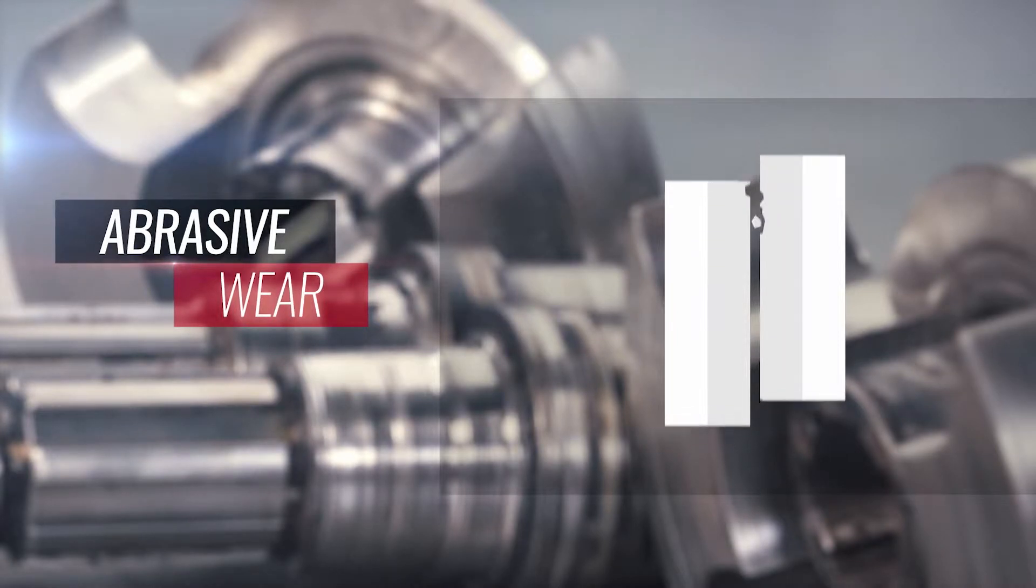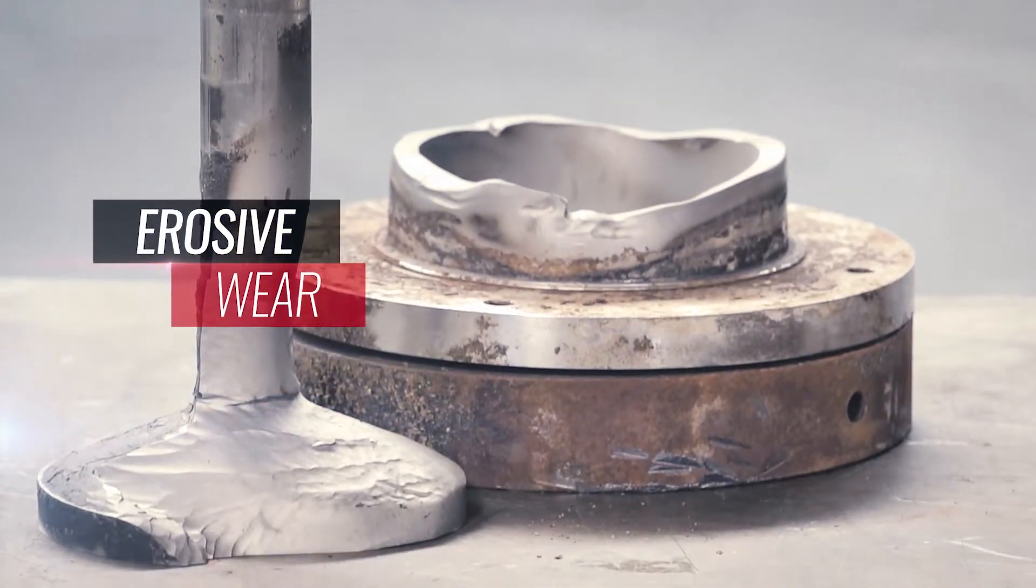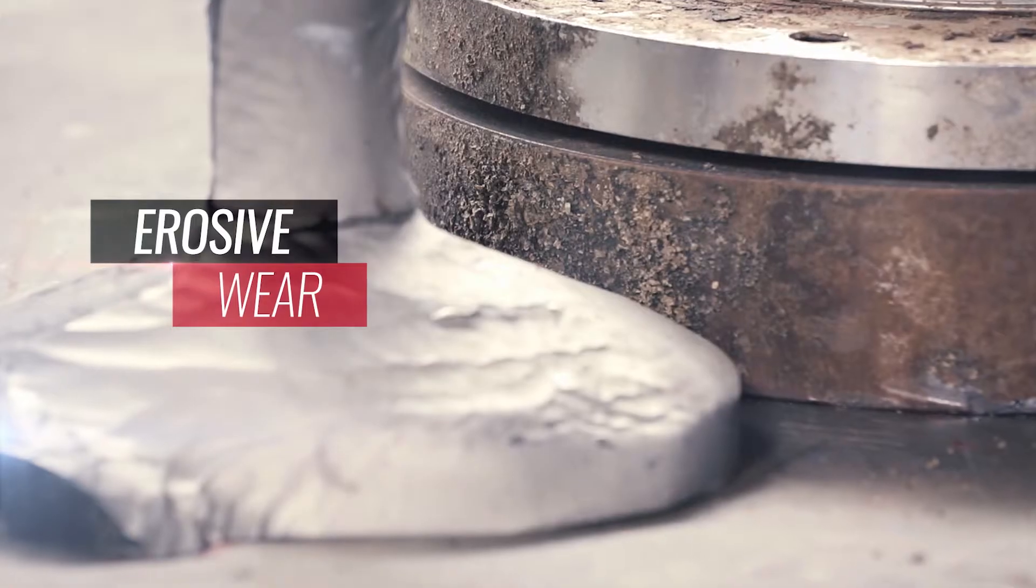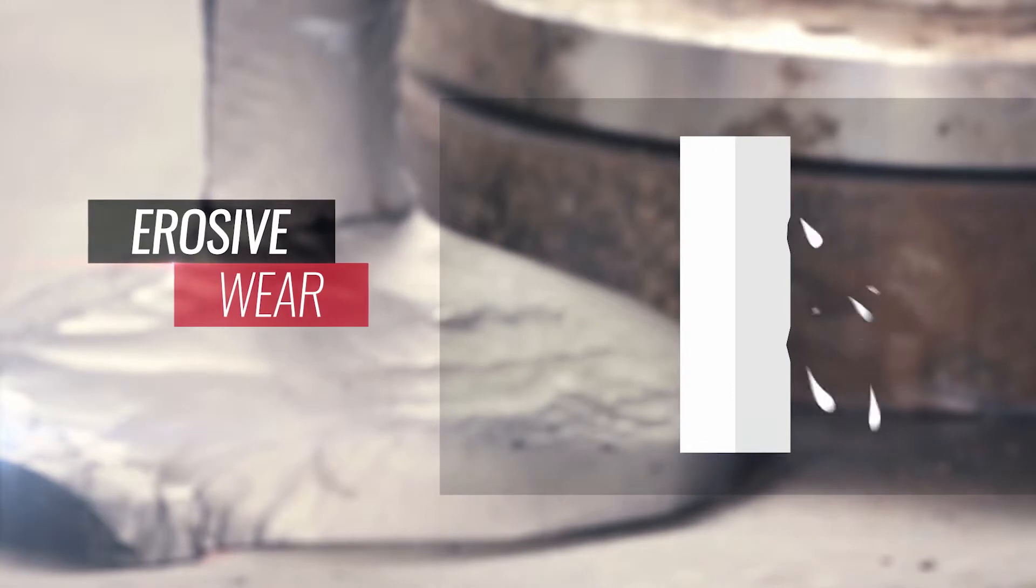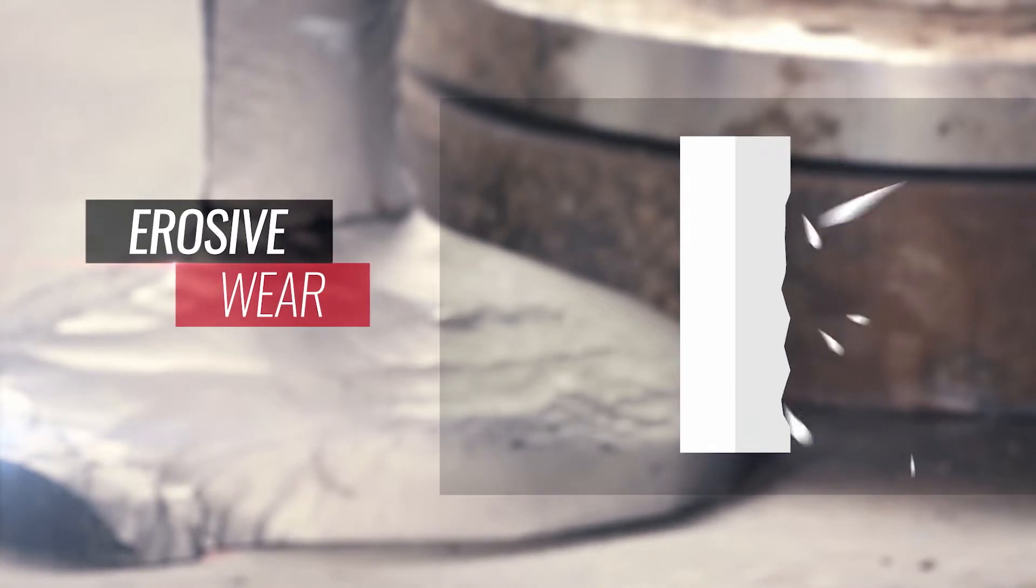Hard or sharp material leaves tracks of wear in the softer opposing surface. Erosion occurs when solid, fluid, or gaseous parts move along a material surface and leave grooves of wear in the surface.